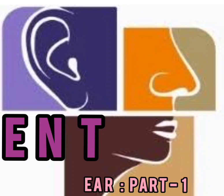The endolymphatic duct is formed by the union of ducts from the saccule and the utricle; it passes through the vestibular aqueduct, and its terminal part is dilated to form the endolymphatic sac, which lies between the two layers of dura on the posterior surface of the petrous bone. The scala vestibuli and scala tympani are filled with perilymph and communicate at the apex of the cochlea through the helicotrema. The aqueduct of the cochlea connects the scala tympani with the subarachnoid space. The ductus reunions connects the cochlear duct to the saccule. Blood supply to the inner ear is via the labyrinthine artery, a branch of the anterior inferior cerebellar artery, which is a branch of the basilar artery.